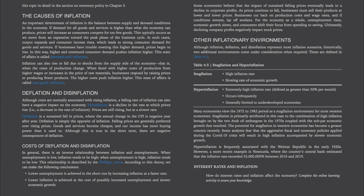The causes of inflation. An important determinant of inflation is the balance between supply and demand conditions in the economy. If demand for all goods and services is higher than what the economy can produce, prices will increase as consumers compete for not enough goods. This typically occurs as we move from an expansion towards the peak phase of the business cycle. In such cases, output expands and consumer income rises, which leads to strong consumer demand for goods and services. If businesses have trouble meeting this higher demand, prices begin to rise. Higher and continued consumer demand pushing inflation higher is called demand-pull inflation.